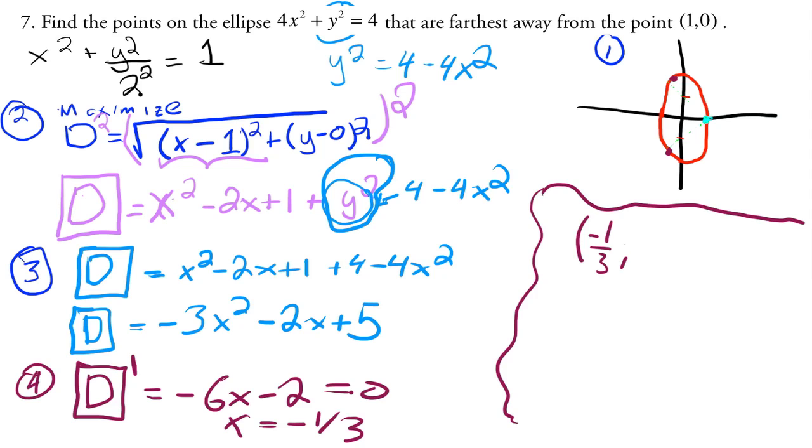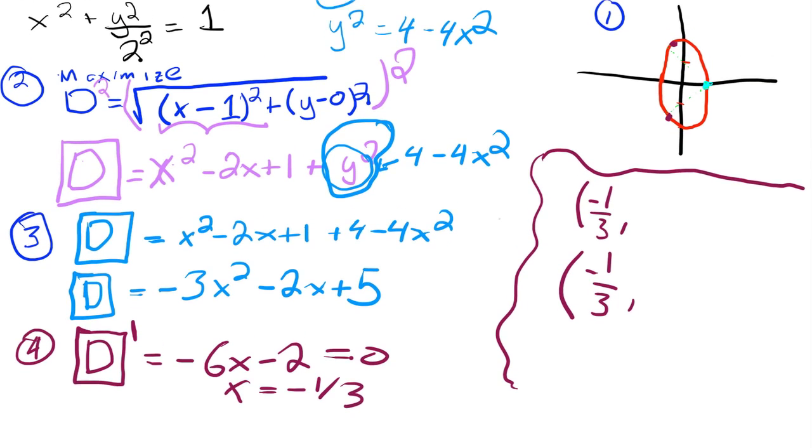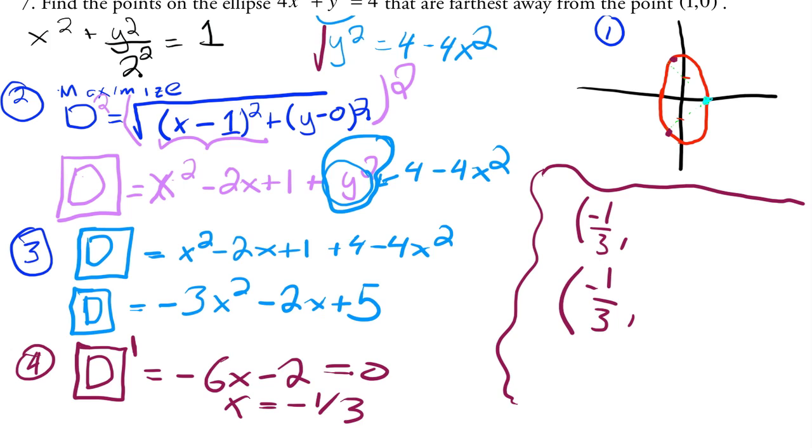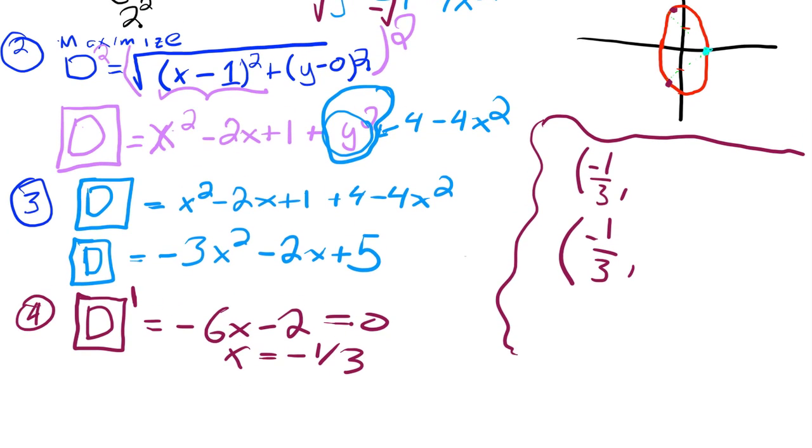We would have to plug -1/3 into this guy. And then there's also another y value when we get... Let's do it, let's plug it in. So here if we get the square root of both sides, we can solve for y. And remember this is plus or minus. So y is equal to plus or minus the square root of 4 - 4 times (-1/3)².